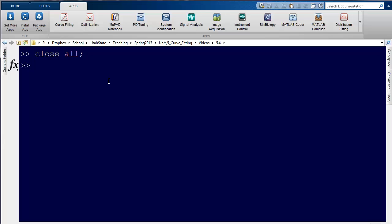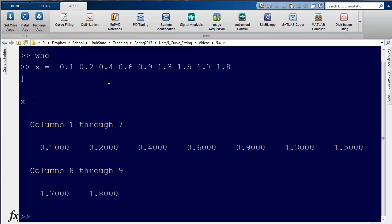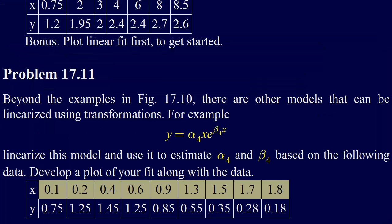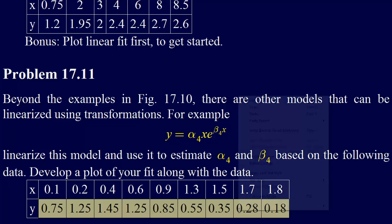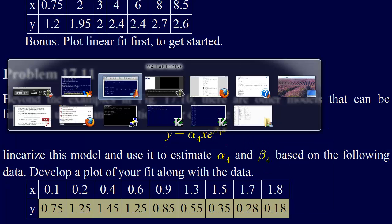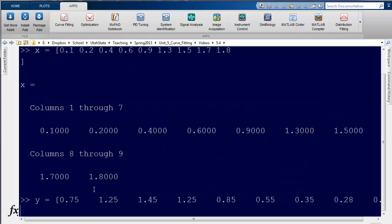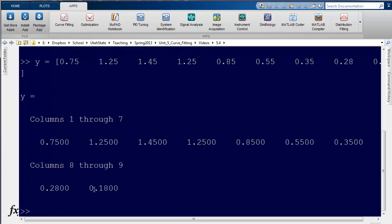All right, so we don't have any variables. We type who, we can see what variables we have. We can say x equals, and then I'll paste the data that I just put in here, and then y equals. Let's grab the y data. All right, so there's the y data.